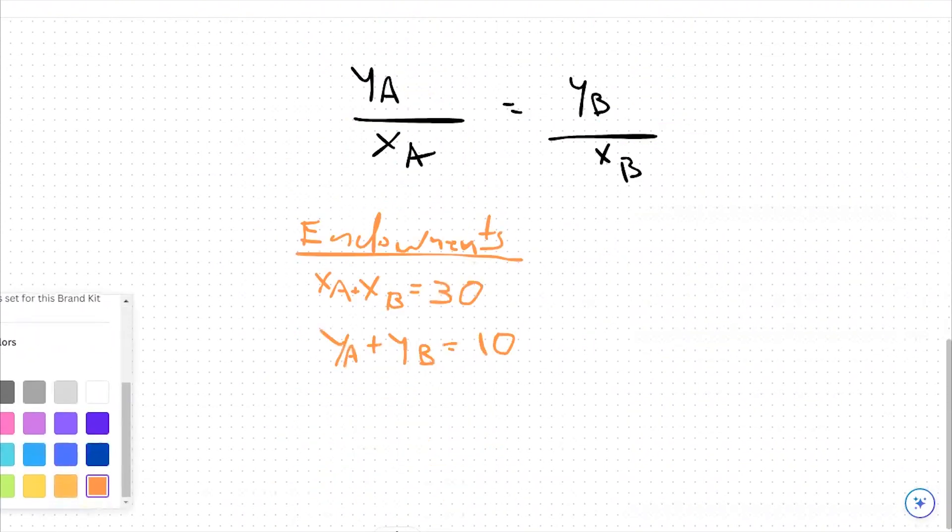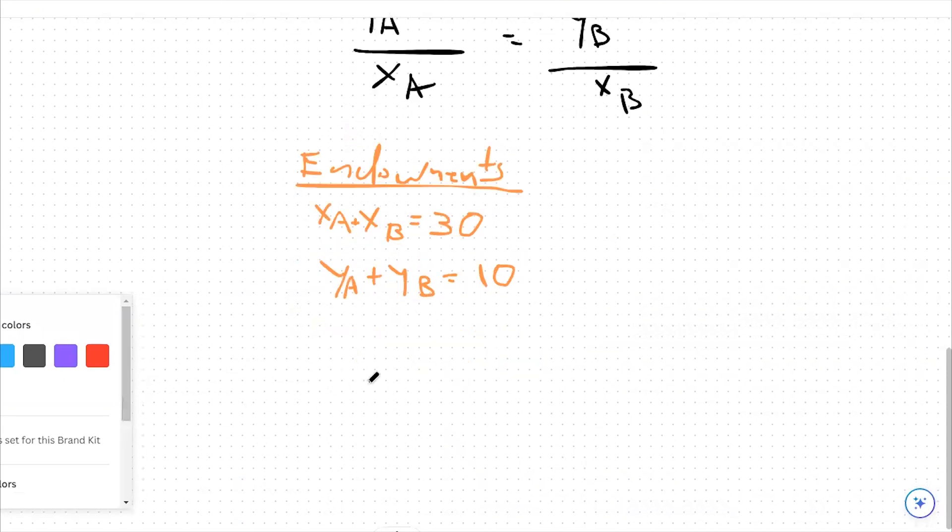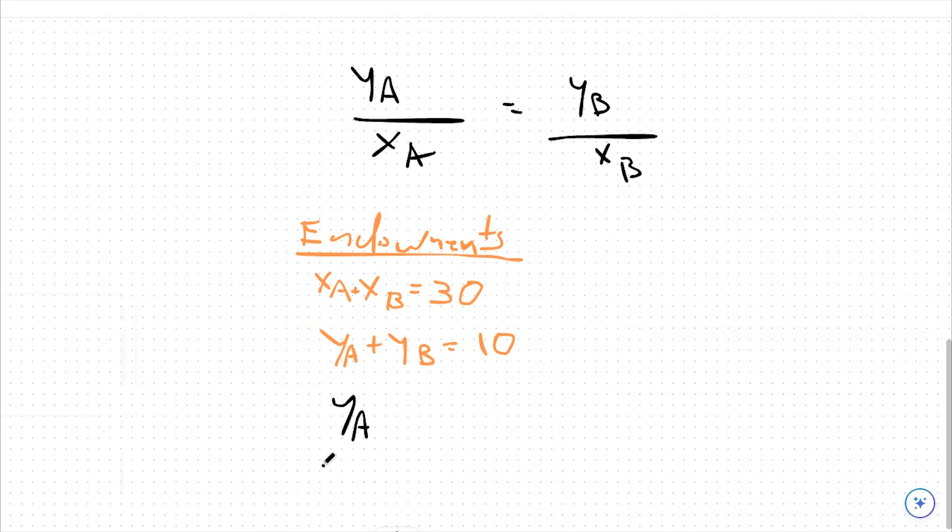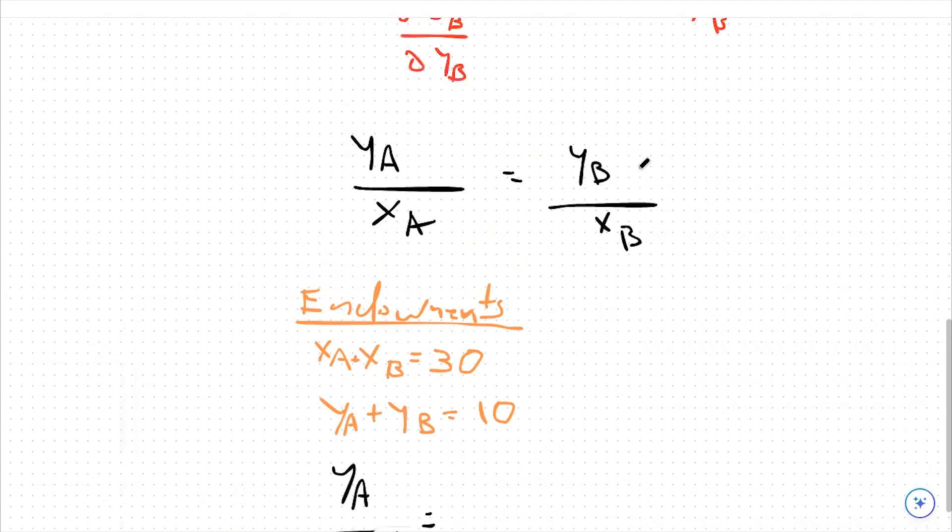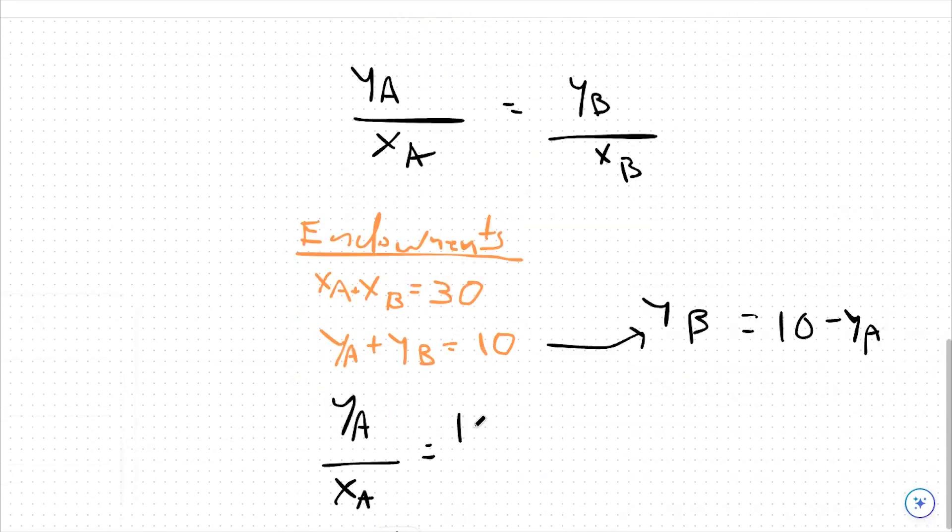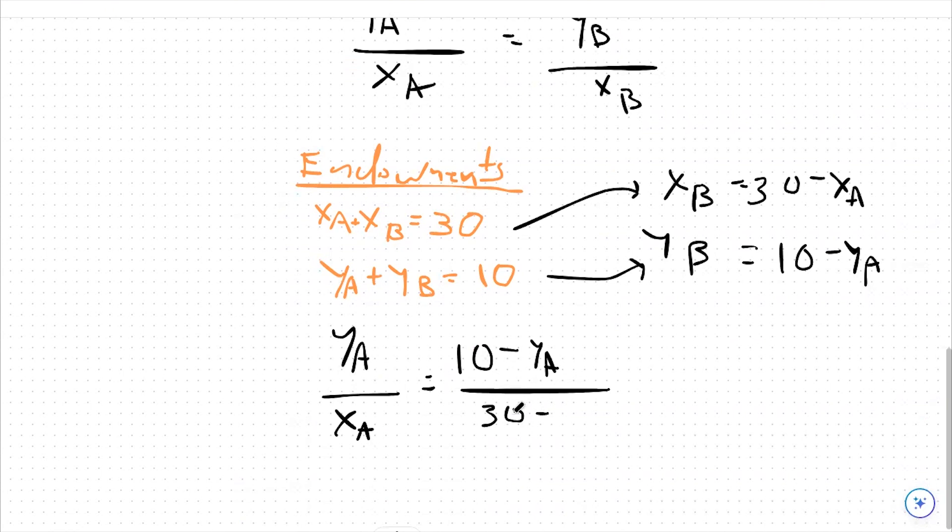With that in mind, we can go back to our math. YA over XA - let's keep everything in terms of YA and XA. What we can do instead is say equals, what's an equation for YB? YB is really equal to 10 minus YA. We can just rearrange this and say YB is equal to 10 minus YA, so I can plug in 10 minus YA on the top here. Same for X, I can say XB equals 30 minus XA. I can plug that in down here. I can say 30 minus XA is my equivalent to XB here.